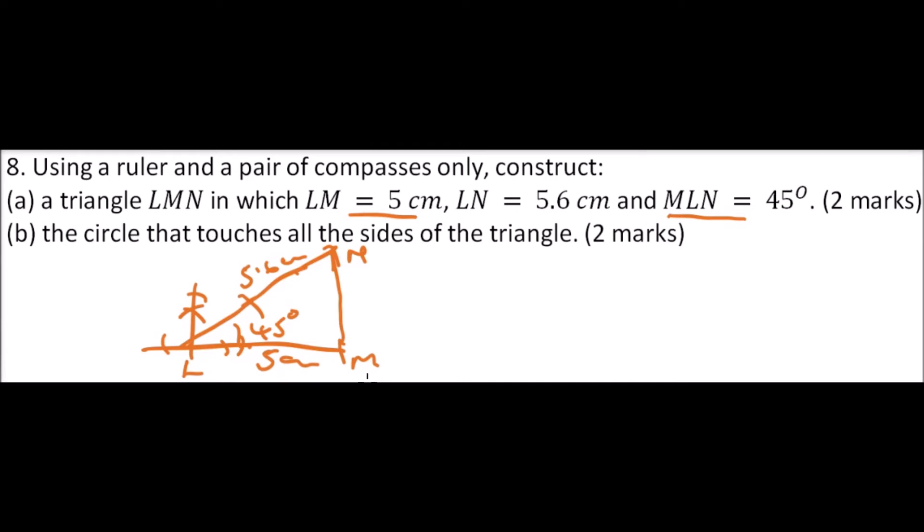Then to get the circle that touches all the sides, you need to bisect this angle 45, so you get that. You again bisect this angle, and you make 2 marks. Where the 2 meets across each other, you use that as the center of the circle. You drop a perpendicular here, and that perpendicular, you use that as a radius, and you will be able to come up with the circle that touches the three sides of the triangle. So that is the procedure, so let's see how we go about it.